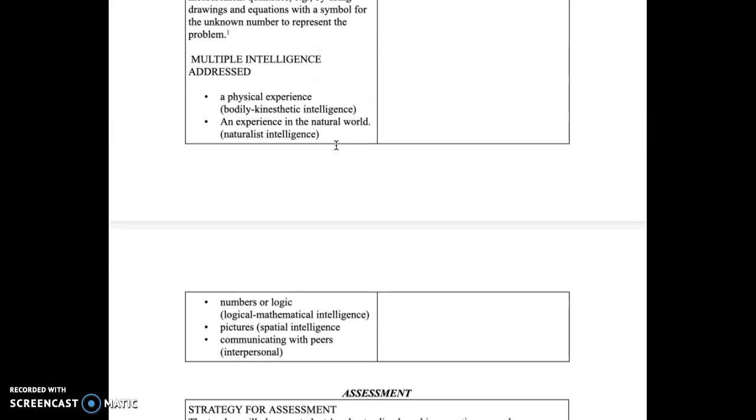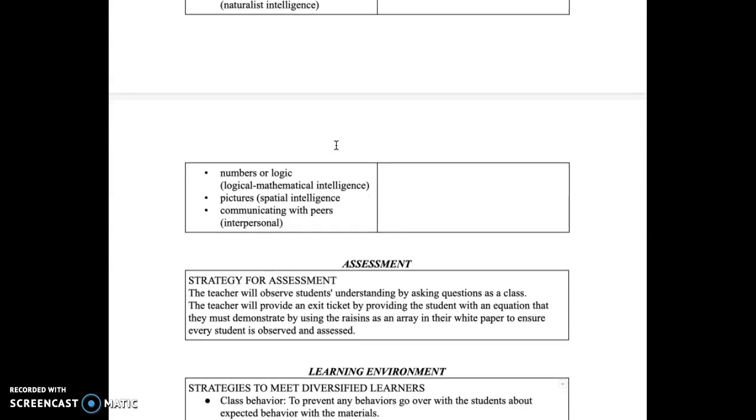The multiple intelligence that will be addressed are physical experience, which is bodily kinesthetic, natural intelligence, which has to do with the grapes. The grapes are natural, they are seeds. You can even extend to that into science if you want it to. Numbers or logic, mathematical intelligence, spatial intelligence, and interpersonal because they will be working with their peers.